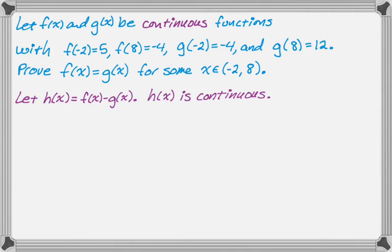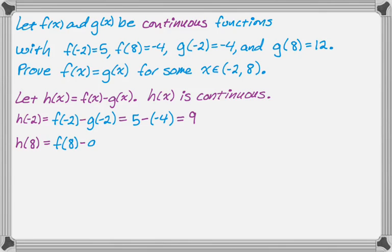So, using what I know, and frequently this information is conveyed in a table rather than being given just discrete points, h(-2) I can calculate as f(-2) minus g(-2), so that's going to be 5 minus -4, which is 9. And then I can calculate h(8), which should be f(8) minus g(8), which, again, pulling from the problem, is going to be -4 minus 12, which is -16.